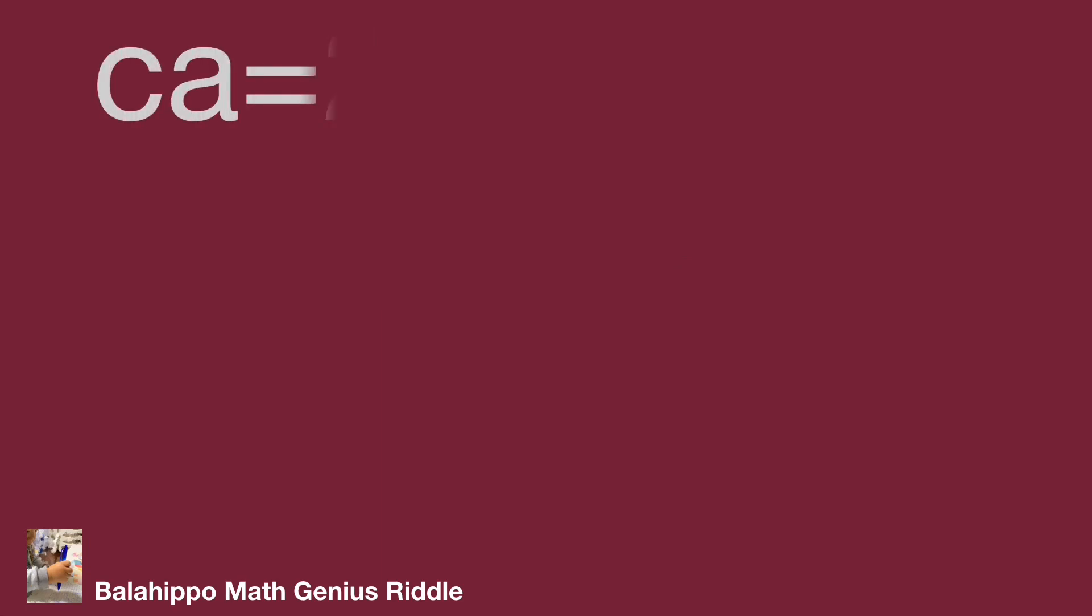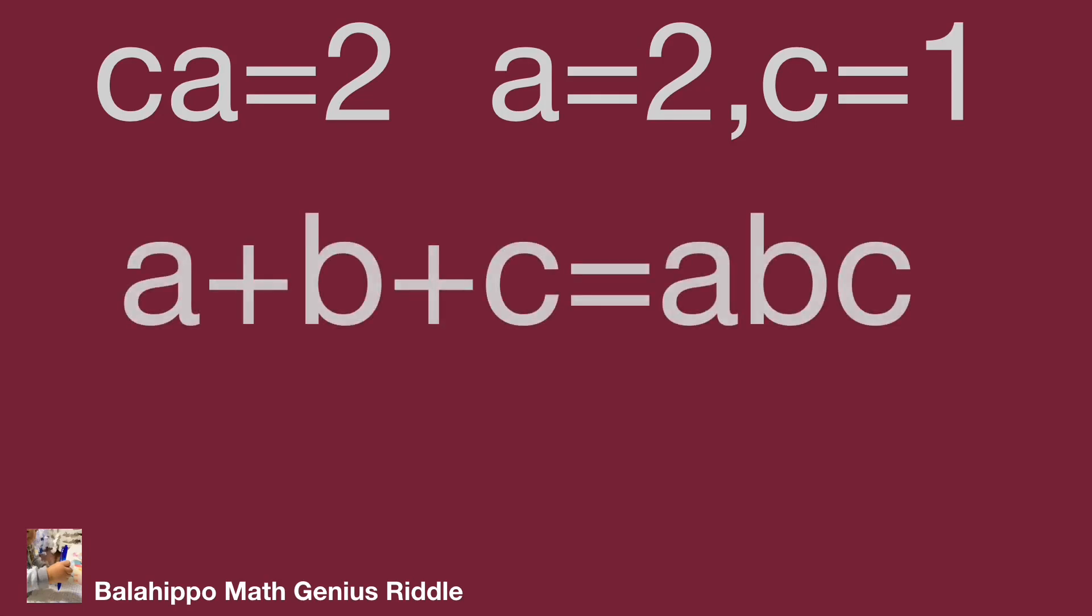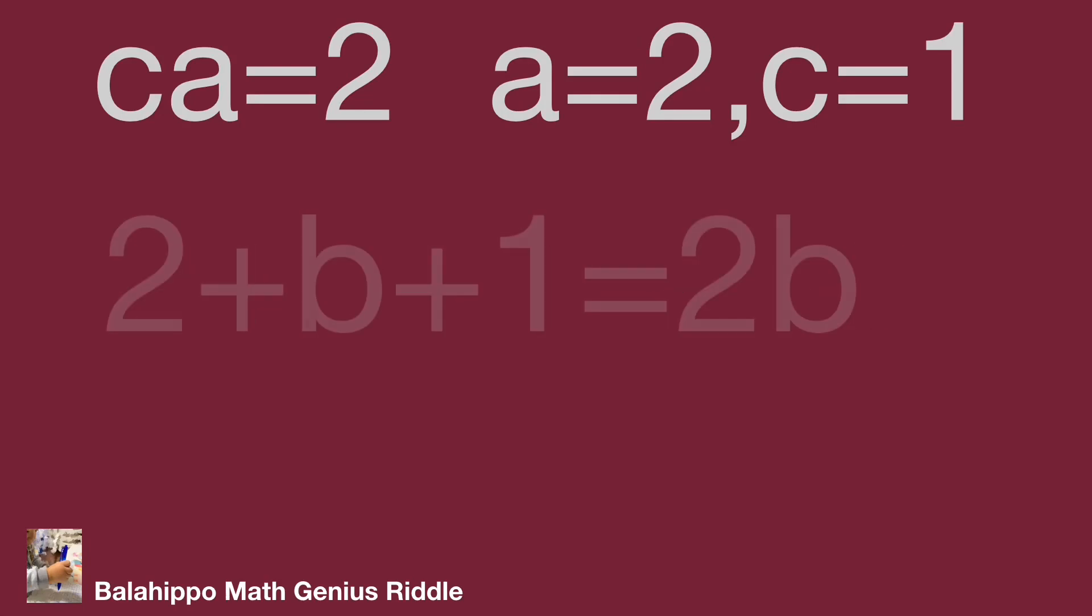When CA equal to 2, as our definition B larger or equal to A larger or equal to C, so A equal to 2 and C equal to 1. Substitute this value to our given equation: 2 plus B plus 1 equal to 2B, get B equal to 3. That's the right answer.